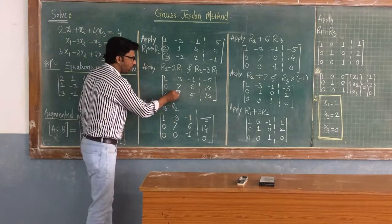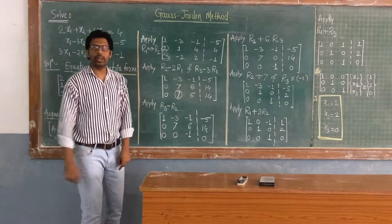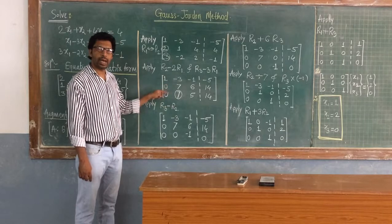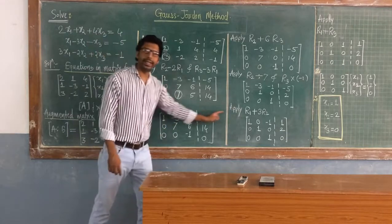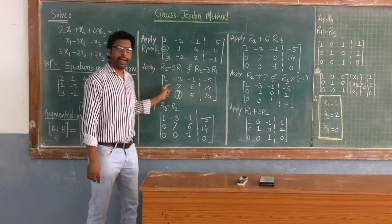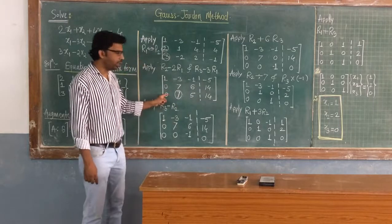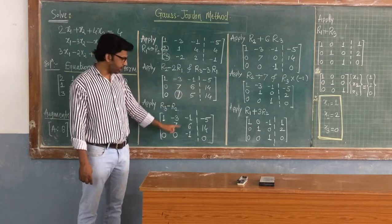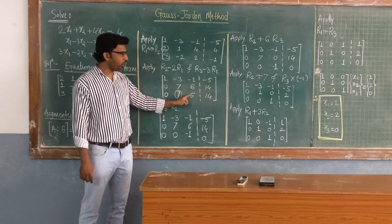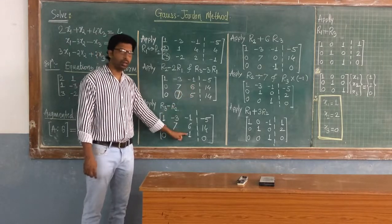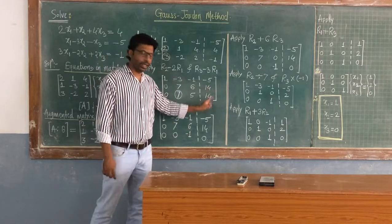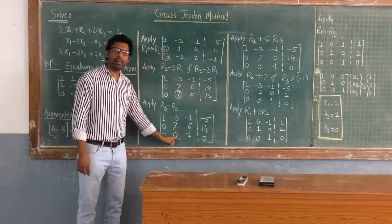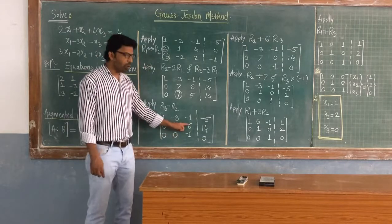Now to convert the second-column element in R3 to zero, select the operation R3 = R3 - R2. The first and second rows remain as they are. In the third row: 0 - 0 = 0; 7 - 7 = 0; 5 - 6 = -1; and 14 - 14 = 0. So these elements become zero.